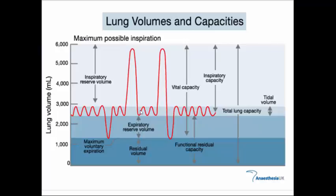Total lung capacity (TLC) is everything the lungs can hold — vital capacity plus residual volume. A chart shows all these values: the smaller line is tidal volume (normal breathing at rest), then IRV (deep breath in), ERV (deep breath out), residual volume (always in lungs, roughly 1,000–1,200 mL), vital capacity, and total lung capacity. These numbers vary based on sex, age, smoking status, and other conditions — the higher, the better.